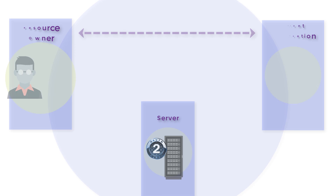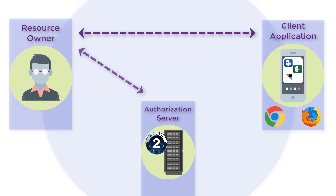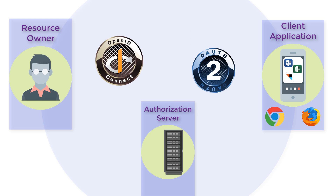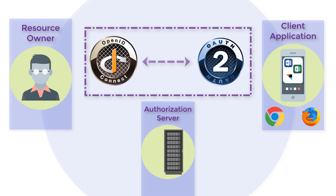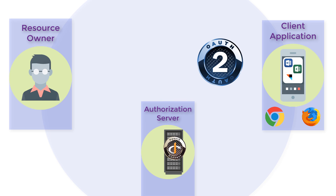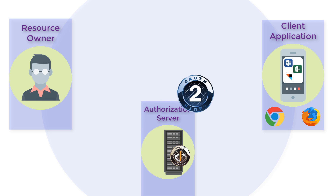In previous videos in this series, we looked at OAuth and how it's used to provide authorization in the cloud with consent. In this video, we'll look at how OpenID Connect provides an identity layer to OAuth. OpenID Connect is a simple identity layer that sits on top of the OAuth 2.0 protocol.